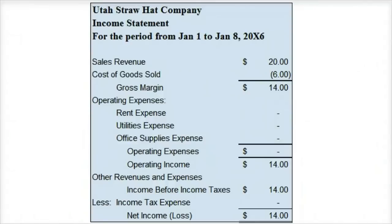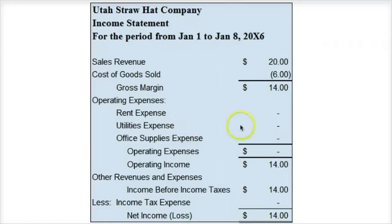Here's the draft income statement. You take sales revenue less cost of goods sold to get the gross margin. If you take gross margin divided by sales revenue, that gives you 70% — a pretty good margin percentage, because it's this margin that can pay for other operating expenses of running the business. If the gross margin is too small to cover operating expenses, you'll result in a loss. In this case, we haven't yet accounted for rent and utilities, but hopefully they will be less than the gross margin. So far, in the unadjusted draft financials, it looks like Utah Straw Hat Company is profitable.